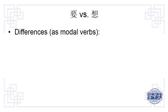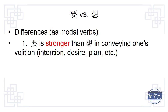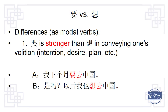There are a few differences between 要 and 想 as modal verbs. The first one is that 要 is stronger than 想 in conveying one's volition. For example: 我下个月要去中国 — I am going to China next month, or I will go to China next month. Because of 要, we know that I want to go, I plan to go, and the plan has been made.